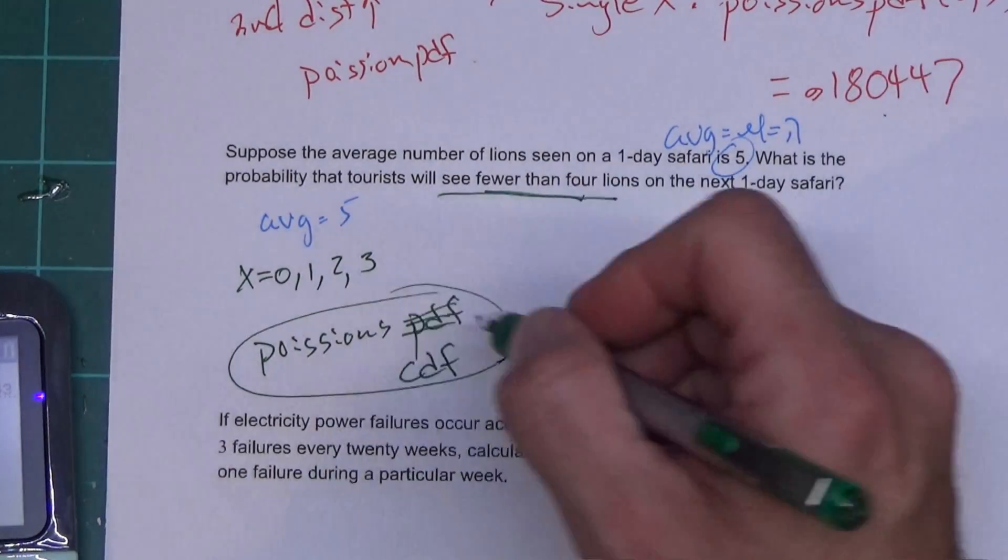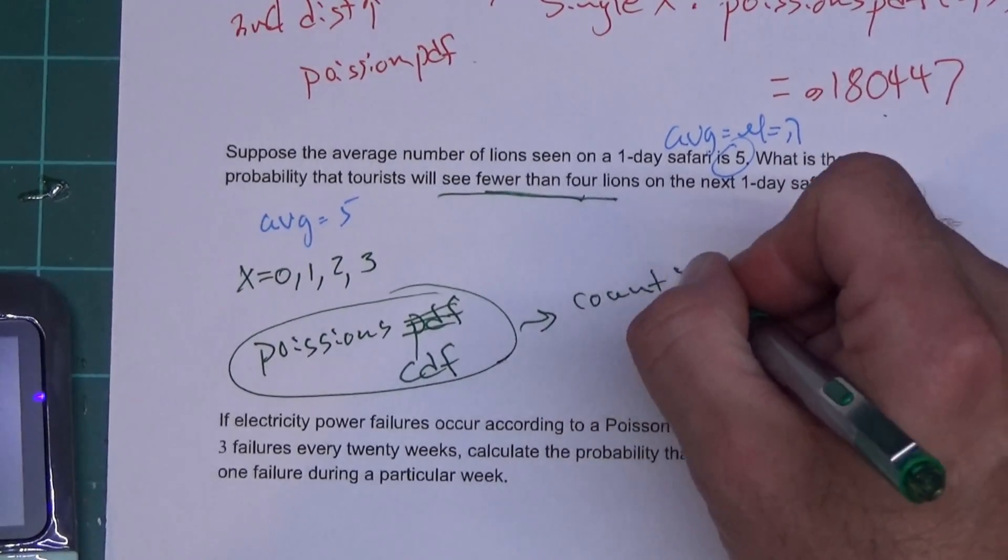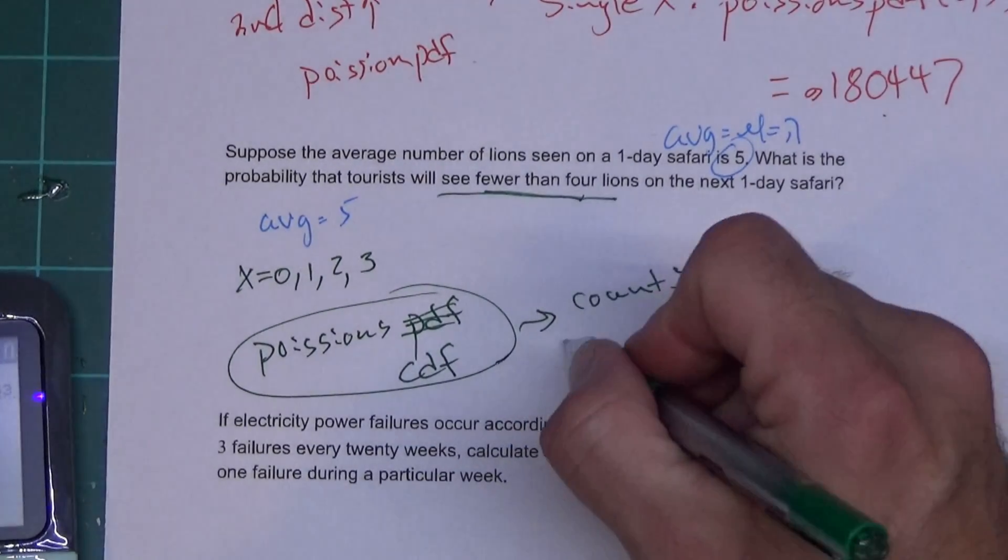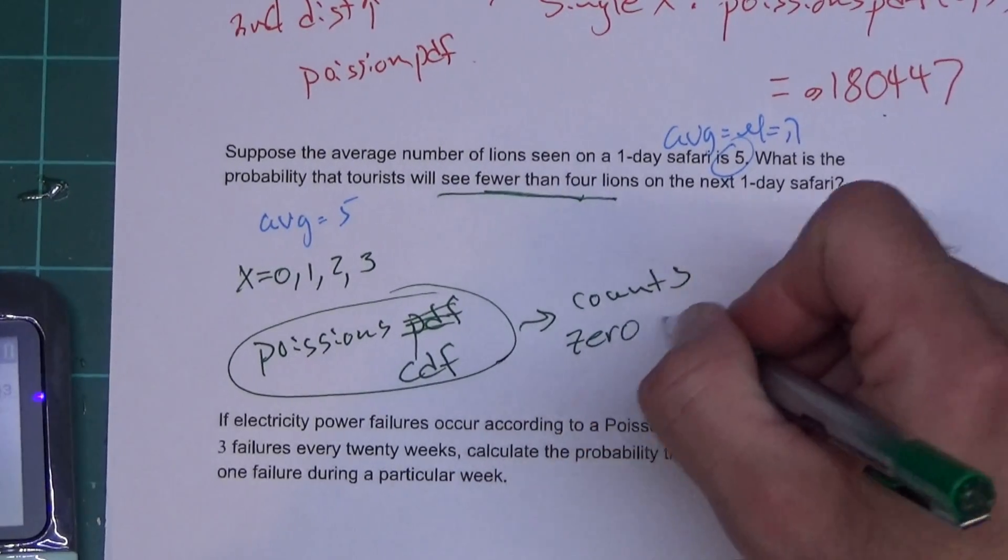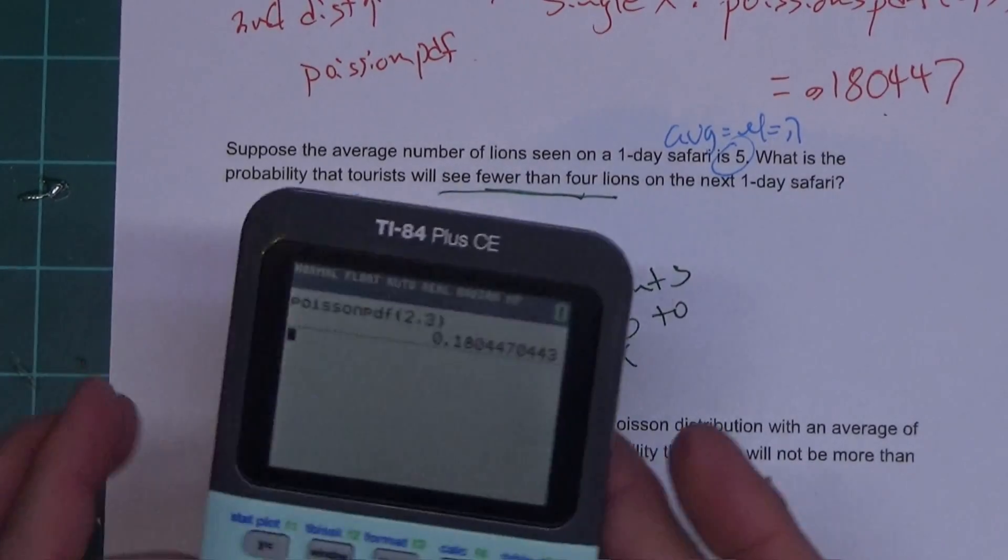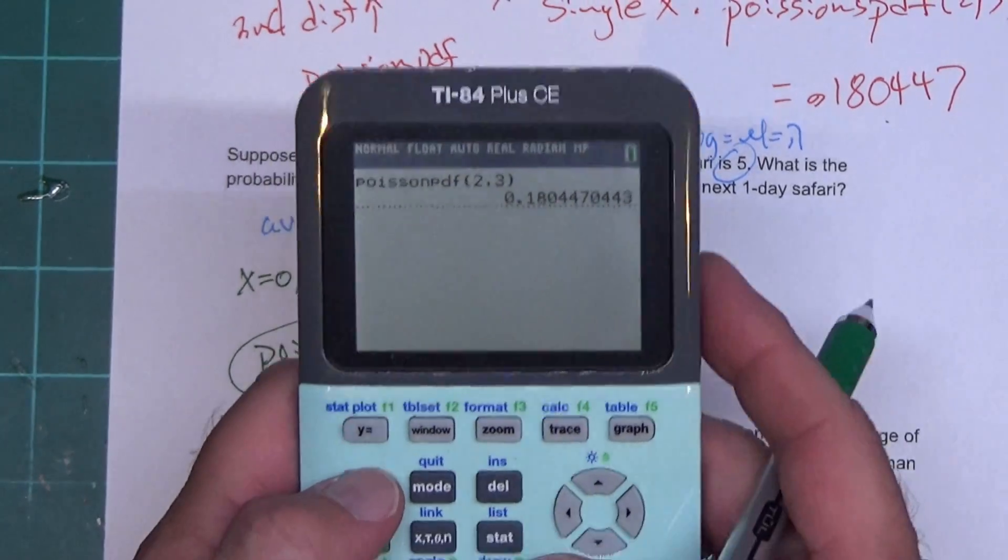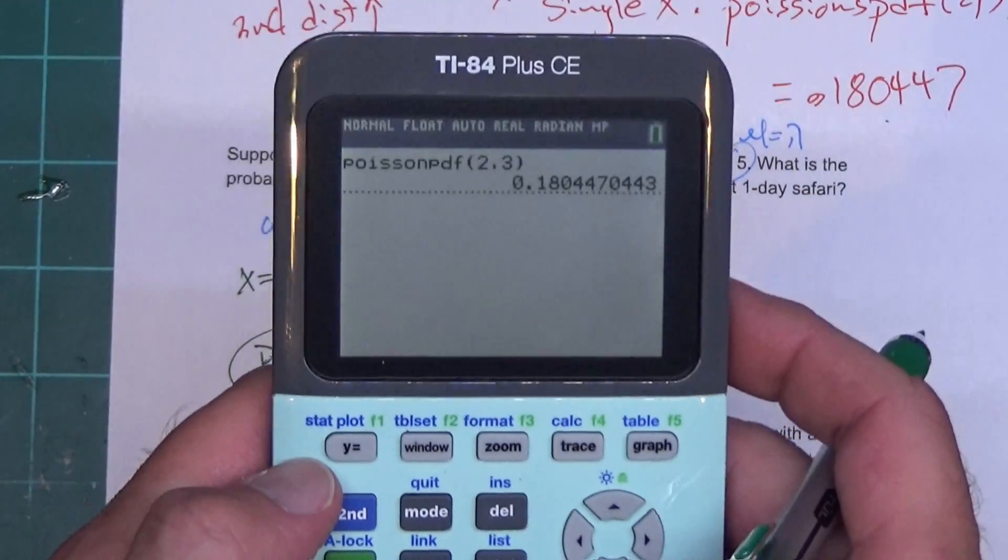Now this Poisson's cumulative always runs from - it counts zero to X, so it can be a little tricky to use. I'd prefer that it start and stop, but they didn't build that into the calculator command for some reason.